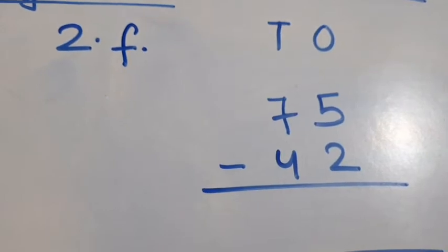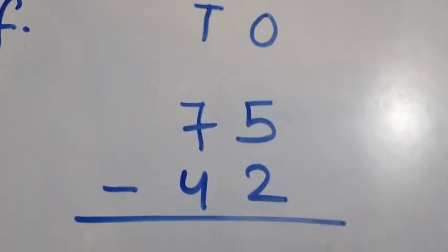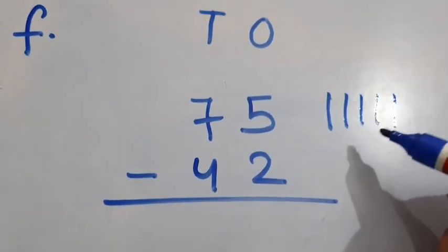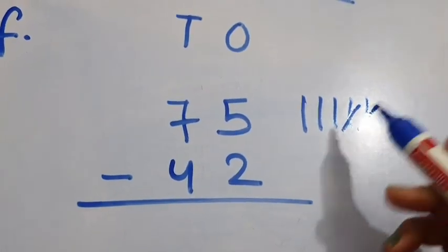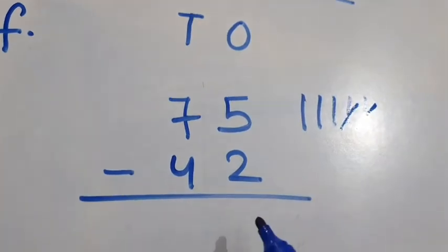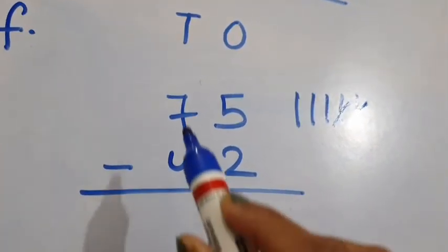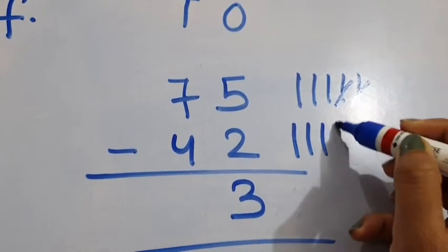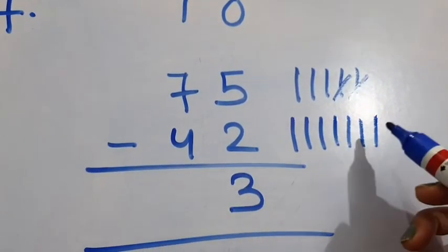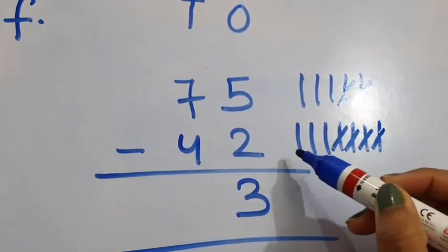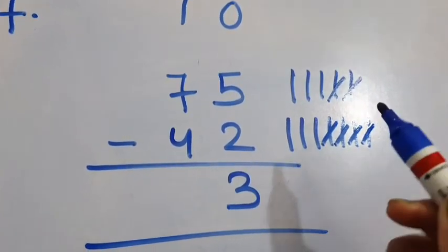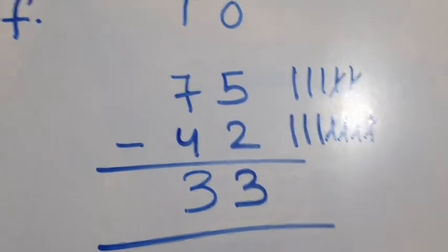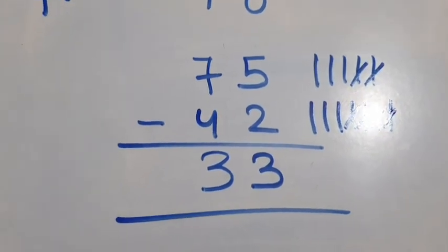2F: 75 minus 42. See the 1's column: 5 minus 2. Draw 5 lines, then cut down 2 lines, so 3 lines are left. We will write 3 in the 1's column. Now see the 10's column: 7 minus 4. Draw 7 lines, then cut down 4 lines. 3 lines are left — so write 3 here. 7 minus 4 is equal to 3. So 75 minus 42 is equal to 33.